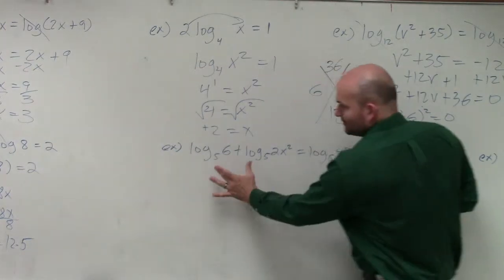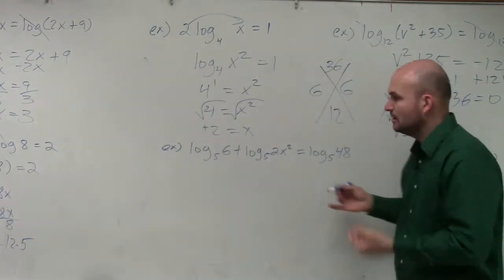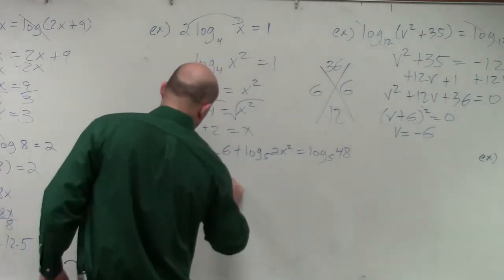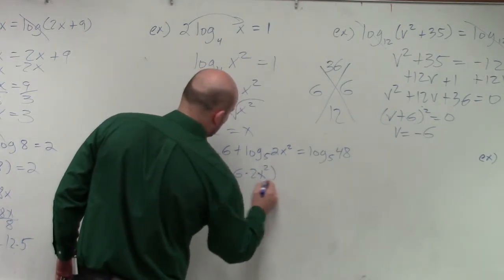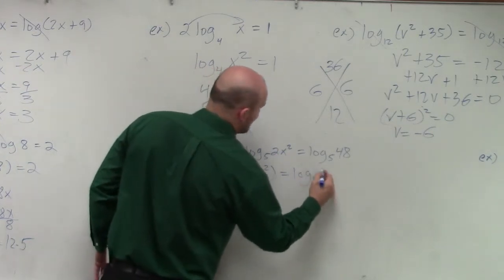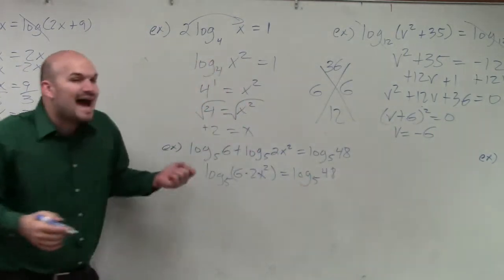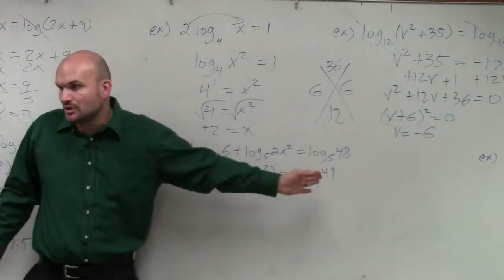So again, we have to combine this to one logarithm, which is going to be log base 5 of 6 times 2x squared equals log base 5 of 48. Now, I have a log equal to a log.